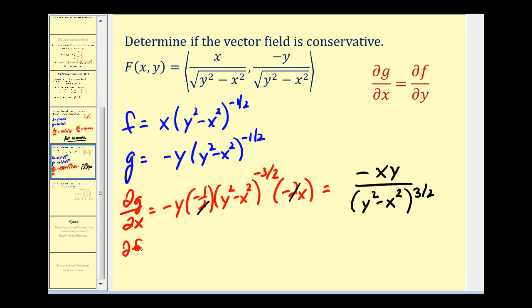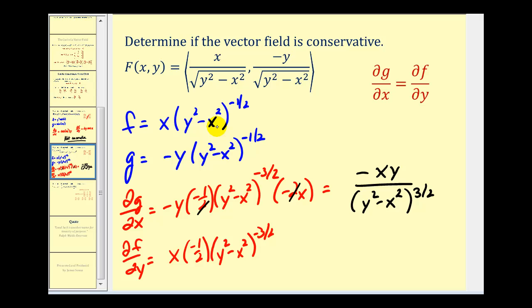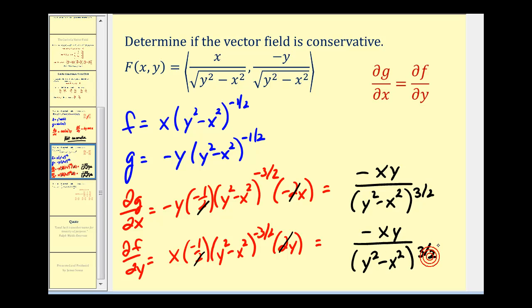Now we check the partial of f with respect to y, treating x as a constant. We get x times negative one-half times (y squared minus x squared) to the negative three-halves, times the derivative of (y squared minus x squared) with respect to y, which gives two y. Simplifying, the twos cancel, leaving negative xy divided by (y squared minus x squared) to the three-halves power. These partial derivatives are equal to each other, and therefore this vector field is conservative.